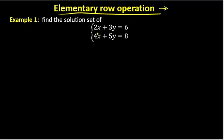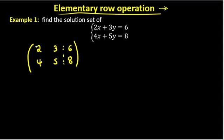We set up the matrix. If you want to write about this, it will be 0. If you want to write about this, it will be rho 2 and rho 1.